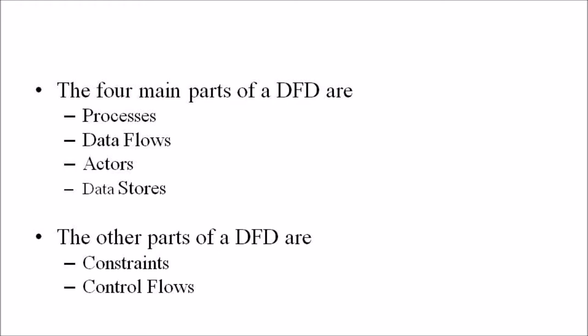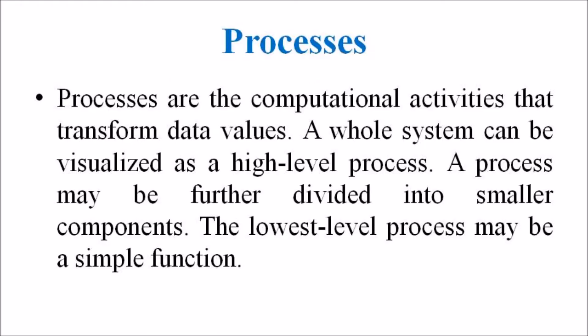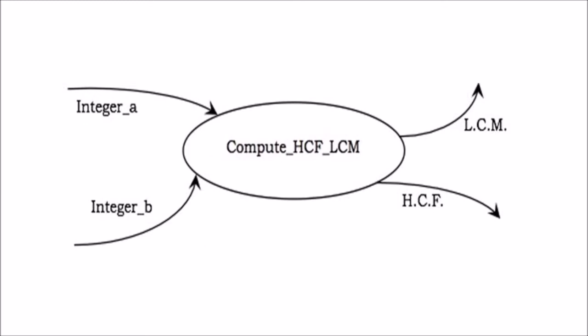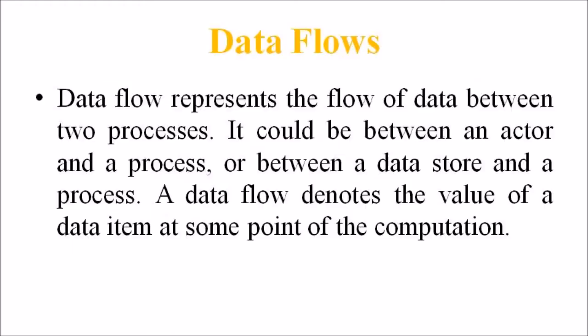Firstly, we are discussing the feature process. Processes are the computational activities that transform the data values. A whole system can be visualized as a high-level process. A process may be further divided into smaller components, and the lowest-level process may be a simple function. In the data flow diagram, a process is represented as an ellipse with its name written inside it, and it contains a fixed number of input and output data values. For example, the figure shows the process compute HCF-LCM that accepts two integers as input and outputs the HCF and LCM. Processes are represented in an elliptical structure with a name in it, with inputs shown by incoming arrows and outputs shown by arrows flowing from the process.